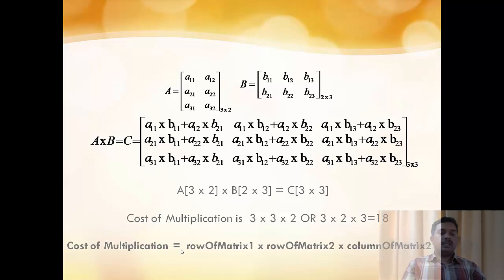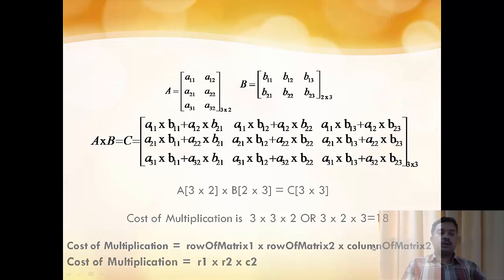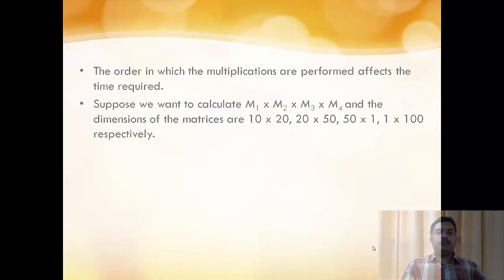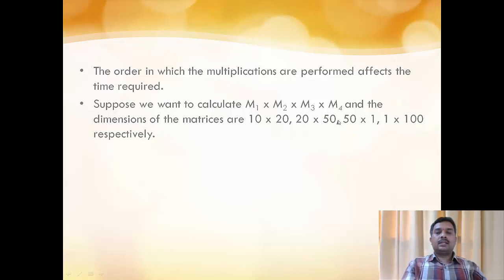The cost of multiplication is: number of rows in matrix 1, times number of rows in matrix 2, times number of columns in matrix 2 — in short, R1×R2×C2. So if 4 matrices are given: M1 is 10×20, M2 is 20×50, M3 is 50×1, and M4 is 1×100.